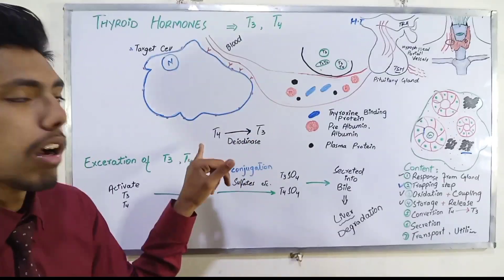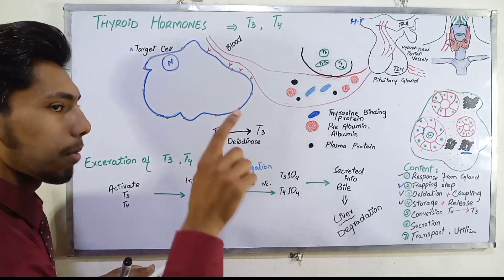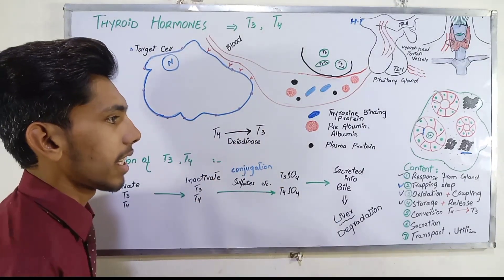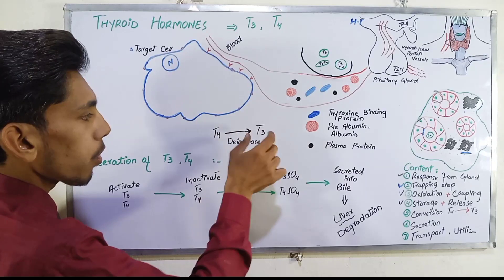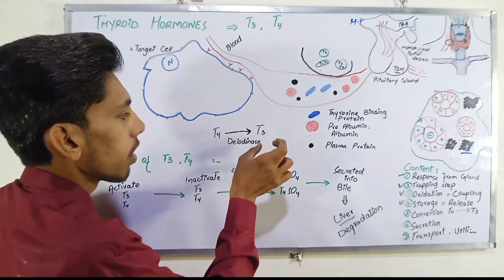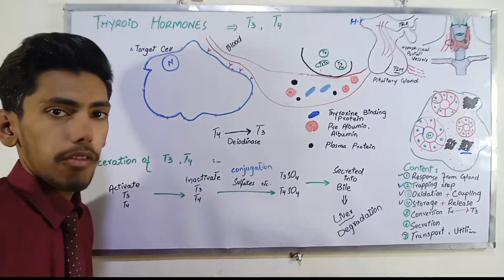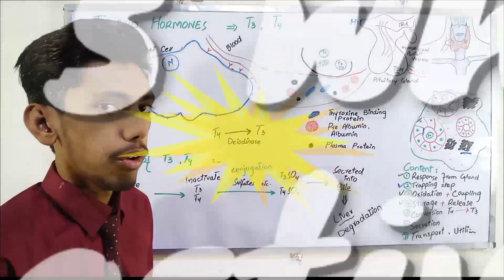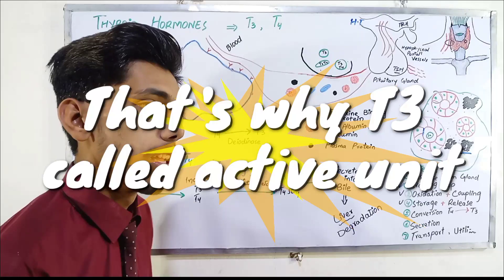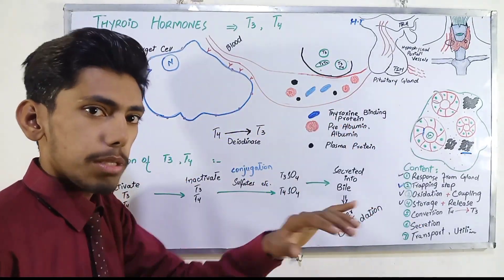T4 can convert to high potential. T3 will perform better function in comparison to T4. T4 is less potent and has a large life, but it is less potent.